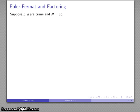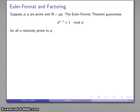This goes back to the idea: suppose I have two prime numbers and N is a product of those two primes. The Euler-Fermat theorem guarantees that for any value a relatively prime to p, a to the power of p-minus-1 is going to be congruent to 1 mod p.